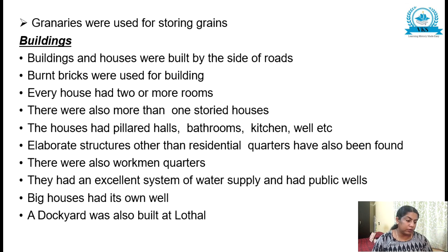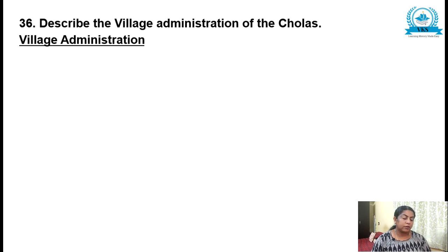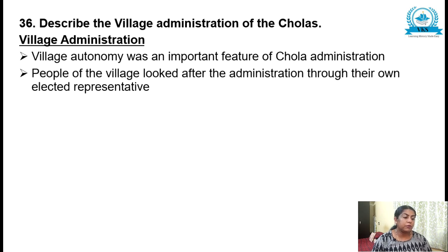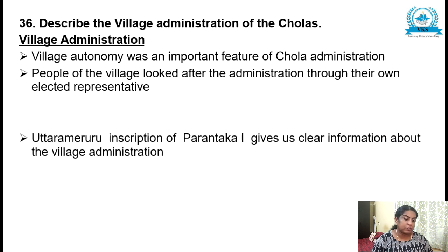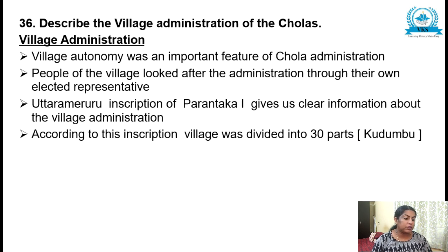The next question, 36th question: describe the village administration of the Cholas. Village autonomy was an important feature of Chola administration. The people of the village looked after the administration through their own elected representatives. The Uttaramehur inscription of Paranthaka I gives us clear information about village administration — this much you can write as an introduction.